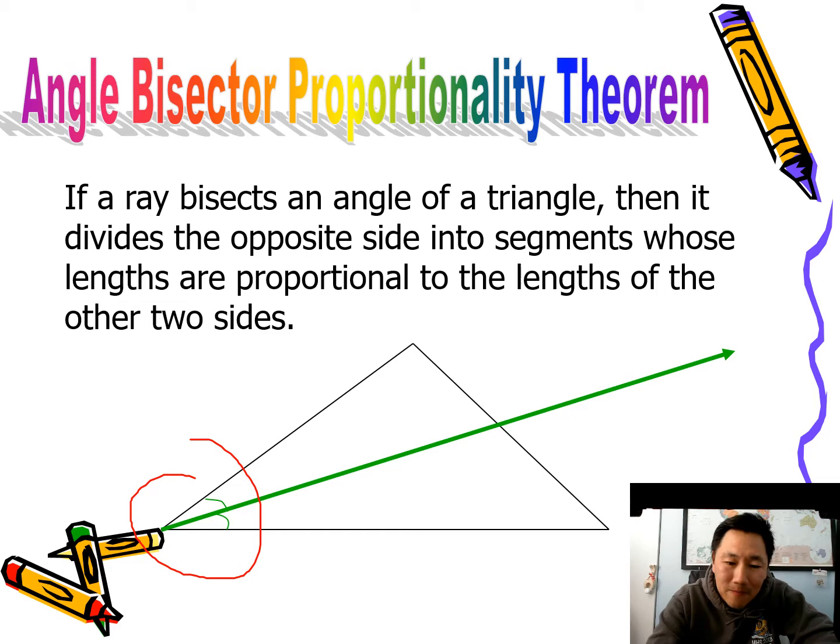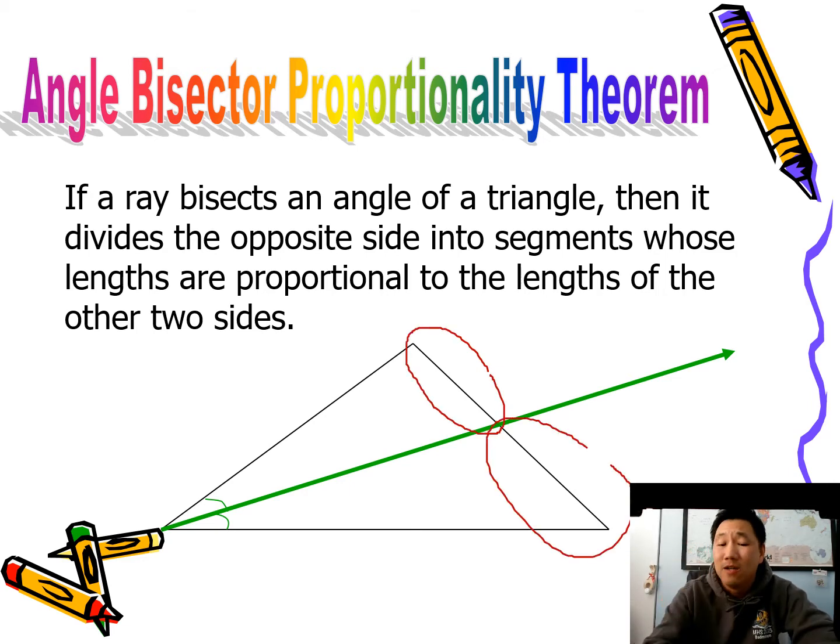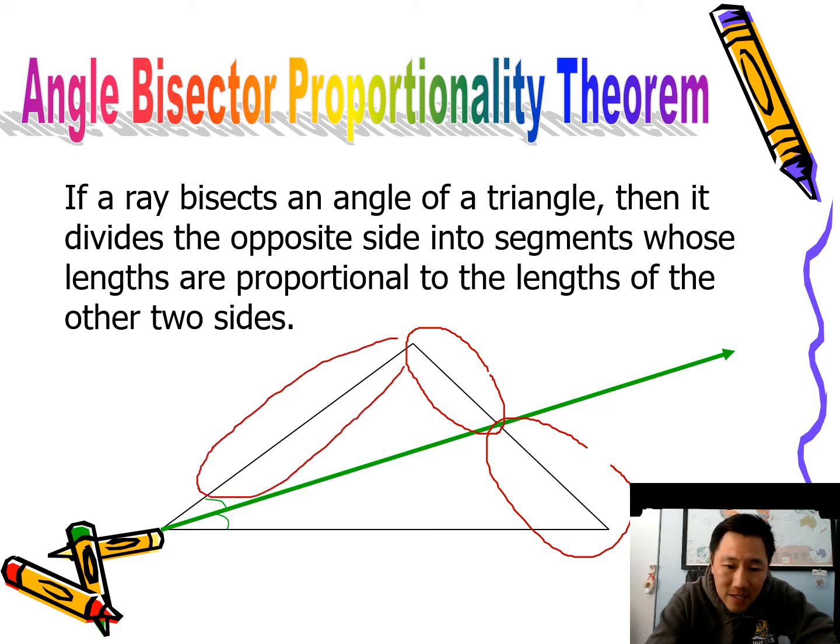According to the theorem, if you have a ray that bisects the angle, then it turns out that this piece is proportional to this piece—not equal, proportional—as this piece is proportional to that piece.